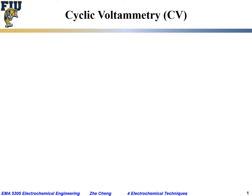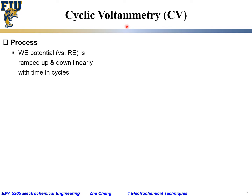Let's take a look at a different technique called cyclic voltammetry, or CV. It is a measuring of the current where you change the working electrode (WE) potential. You change the potential with respect to the reference electrode, or RE.